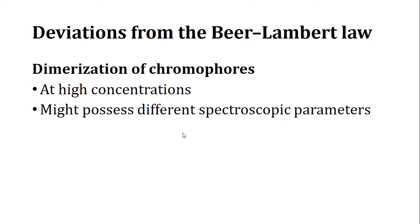Regarding deviations, there may be dimerization of chromophores at higher concentrations, overall forming a third type of species. For example, if compound A dimerizes to form A₂, there is now another type of species being observed.